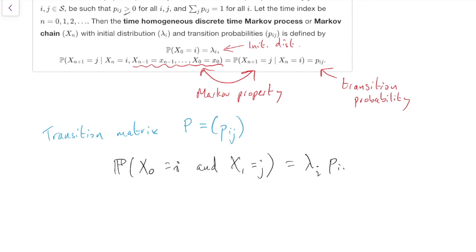Right, so those two terms there. Lambda i, we start from i. And p, i, j, we move on to j. And that gives us the probability that x0 is i and x1 is j.